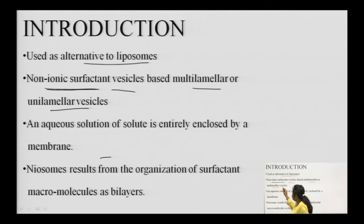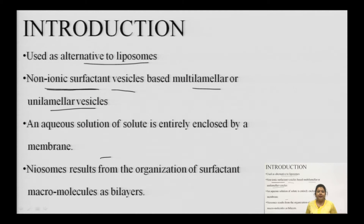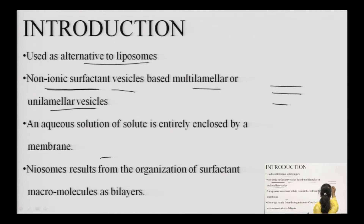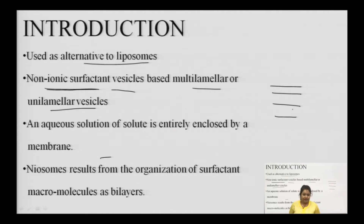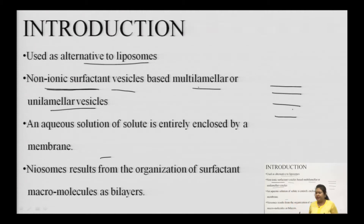Neosomes can be multilamellar or unilamellar. Multilamellar means more than one layer, unilamellar means one layer. Multilamellar has more than one layer deposited one above another - a stack-like structure. The lamellar structure can be more than one in multilamellar and only one in unilamellar.